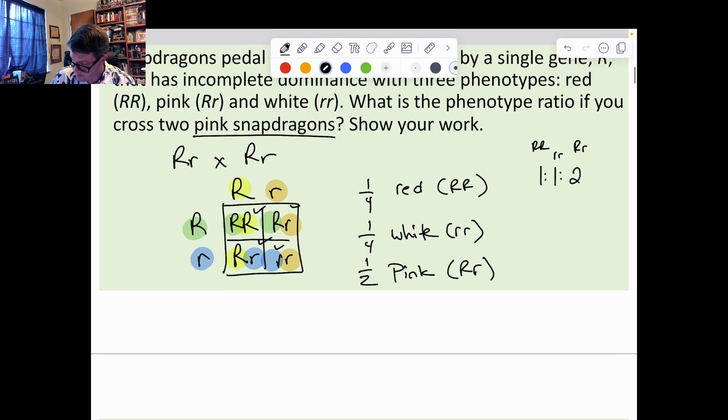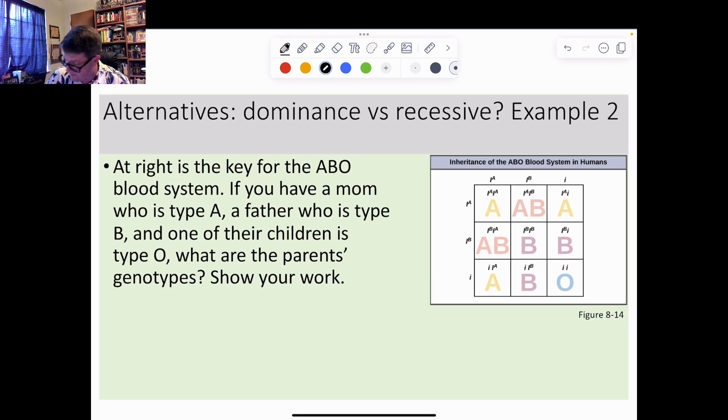Here is a key for the ABO blood system. You have a mom who's type A, father is type B, children is type O. What are the parent genotypes? To get that, mom is type A, dad is type B. When we look at being type A, I can either be homozygous or heterozygous. Same thing for being type B, I could be homozygous or heterozygous. But if you're type O, there's only one choice, that is little i little i. The only way that's possible is if this little i came from dad and this little i came from mom. So what do their parent genotypes have to be? They both need to be heterozygous.